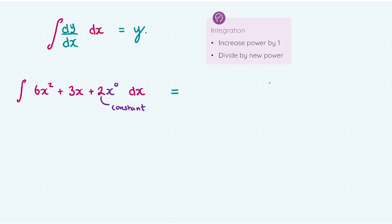So taking 6x², I increase the power by 1. So I bump it up to x³, and I divide by the new power 3. Onto 3x. That x has technically a power of 1 there. So I raise it, I increase it by 1. So I get 3x², and I divide by 2.